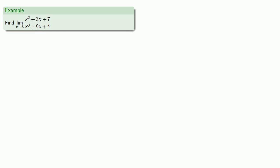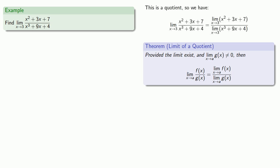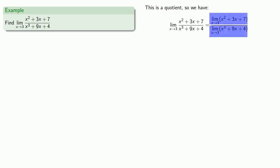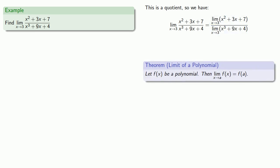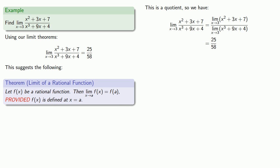What about a rational function like x squared plus 3x plus 7 over x cubed plus 9x plus 4? Since this is a quotient, we can find the quotient of the limits. We're now looking at the limits of two polynomials, so we can evaluate both by evaluating the polynomials at the limit point 3. This suggests the following: let f of x be a rational function, then the limit as x approaches a of f of x is f of a, provided that the rational function is actually defined at x equals a.